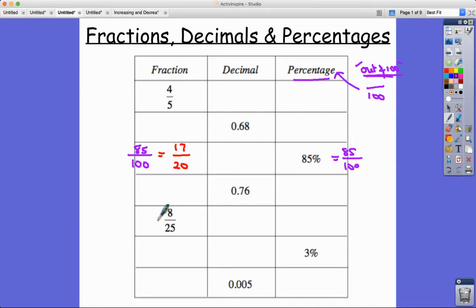This is probably the easiest one to think about first. We've got 8 over 25. What would it be out of 100? 25 times 4 gives us 100, and 8 times 4 gives us 32. So this is actually equivalent to 32 over 100, which tells us our percentage of 32 percent.